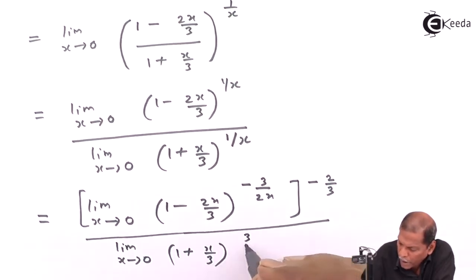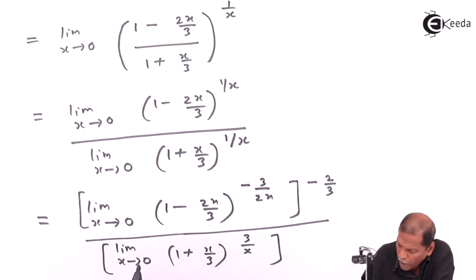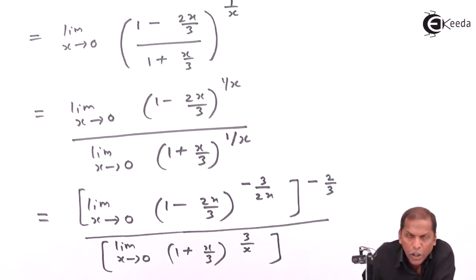then its reciprocal is 3 upon x, and again its reciprocal containing only the number, that is 1 by 3 only. So in this way we adjust the denominator.